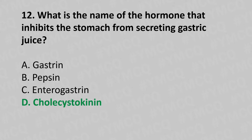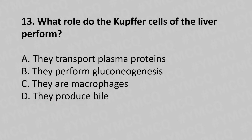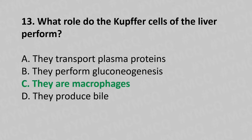Now let's move to question number 13. What role do the Kupffer cells of the liver perform? Option A: They transport plasma protein. Option B: They perform gluconeogenesis. Option C: They are macrophages. Option D: They produce bile. And the answer is Option C: They are macrophages.